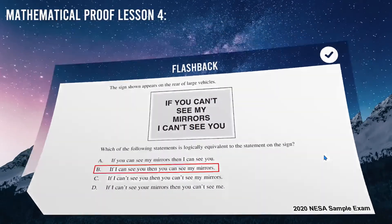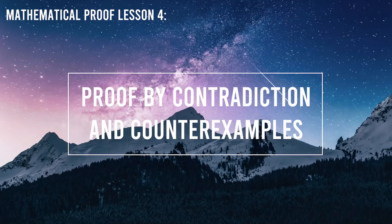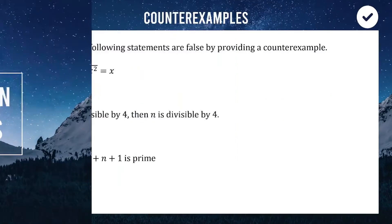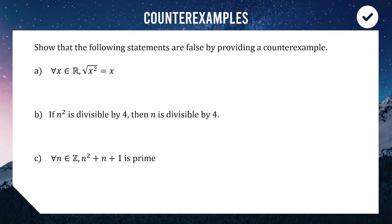For today's lesson we are looking at proof by contradiction and also a quick look at counterexamples. Starting off with some counterexamples — here are some statements that we are going to show are false by proving there is at least one example where the statement is not true. The first one says: for all real numbers x ∈ ℝ, √(x²) = x. We're trying to find a real number where that isn't true.